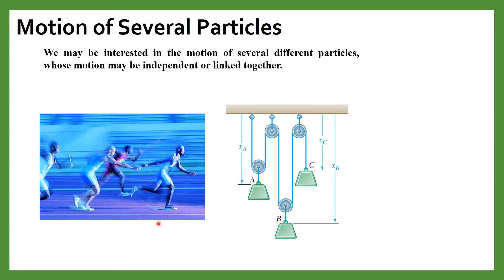For example, you can see in this figure the relay race which is usually conducted in athletics, where one person is related to another. Similarly, you can see in this figure that there are several pulleys and several weights whose motion are connected with each other. For example, the motion of C depends on the motion of B and motion of A.